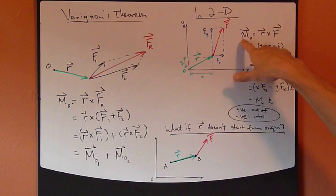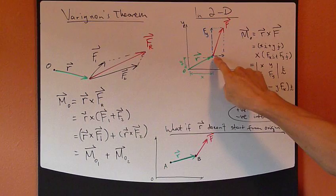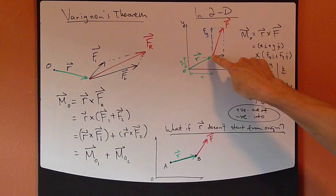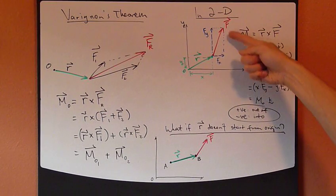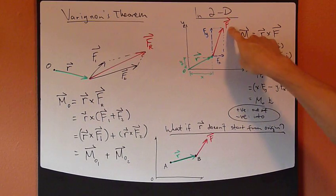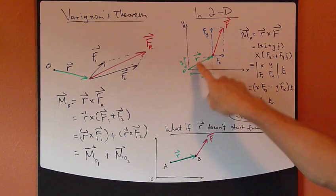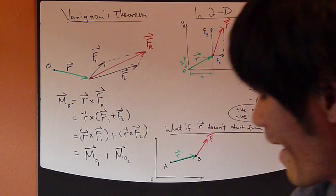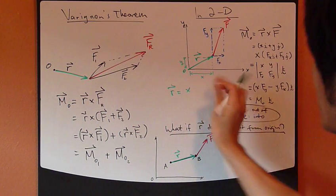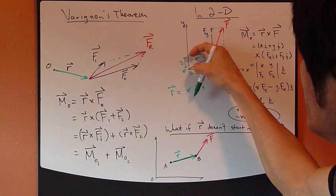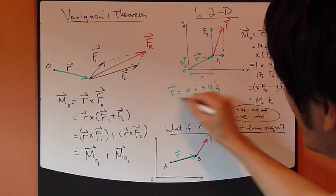Right, so basic definition is the same. So moment vector about point O equals R cross F. So R is right here to this point. And this point is where this force is applied, this F vector. Now this F vector can be resolved into X and Y components this way. And R vector is exactly equal to X, this length right here, I, plus the Y height, J direction.